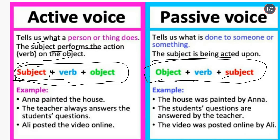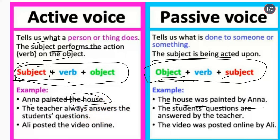In active, the subject comes first. For example, 'Anna painted the house' — Anna is the subject, painted is the verb, and the house is the object. In passive, it becomes 'The house was painted by Anna.' Here, the house is the object, was painted is the verb, and by Anna is the subject. This follows the passive rule: Object + Verb + Subject.